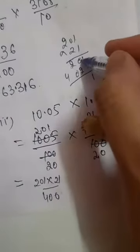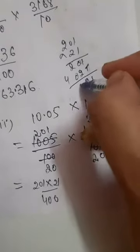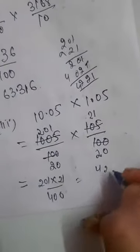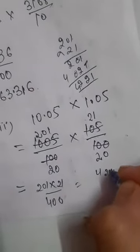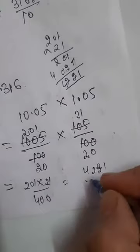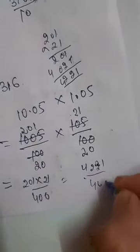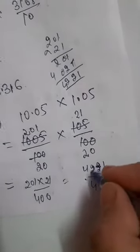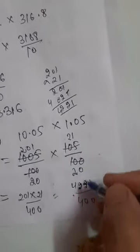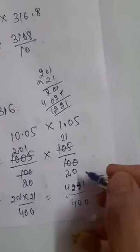Adding: 4221 divided by 100 times 100 equals 4221 divided by 400. Or you can divide 4,221 divided by 400, you can convert this fraction into decimal.